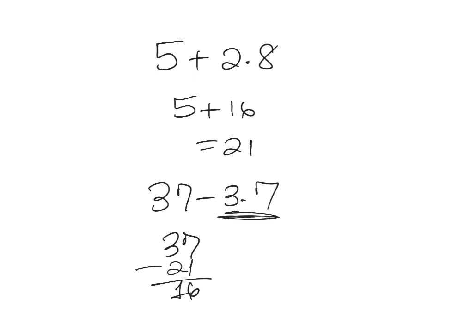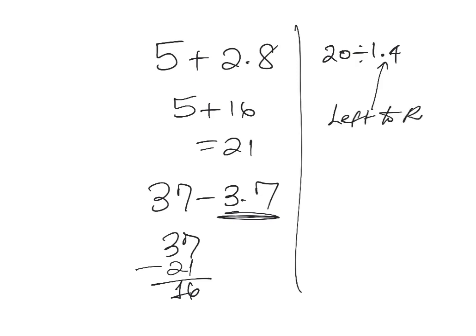Moving to another section — number fourteen: what is twenty divided by one times four? Keep in mind that when you see a center dot, it represents multiplication. Remember, for multiplication and division you go from left to right, so twenty divided by one is just twenty, and twenty times four gives you eighty.